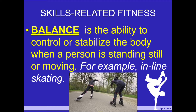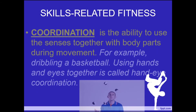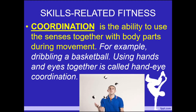Biking is also considered a balance activity. The third skill is coordination. Coordination is the ability to use the senses together with body parts during movement. For example, dribbling a basketball. Using the hands and eyes together is called hand-eye coordination, or juggling. Another example is the chest pass in basketball, which is also considered coordination.